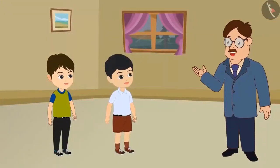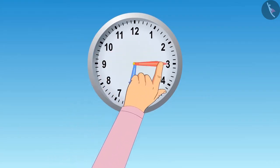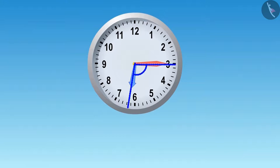After hearing both, uncle said Golu's answer is absolutely correct. Right angles form in the clock only when it's 9 o'clock and 3 o'clock, not at 6:15. Look here, hands of the clock are like this at 6:15.